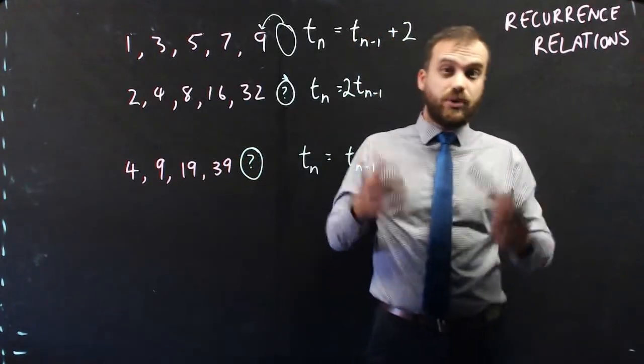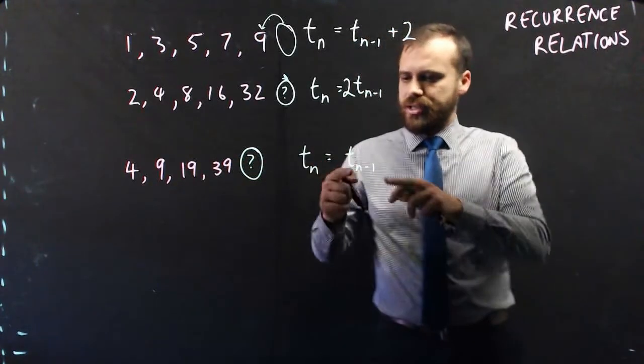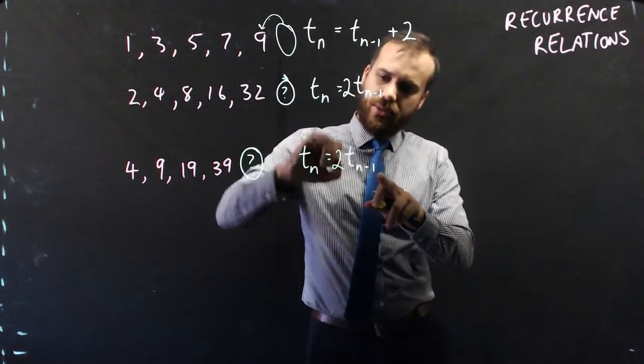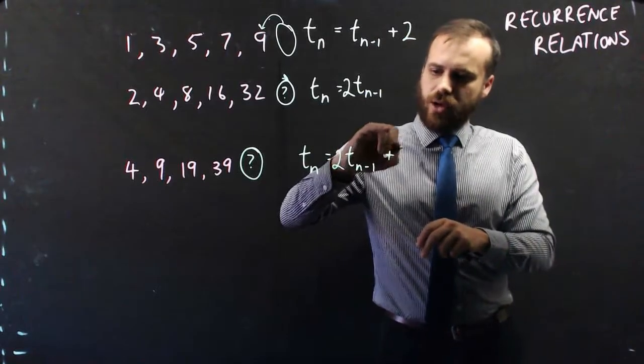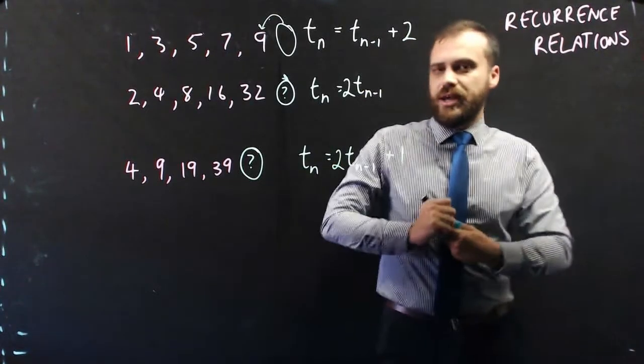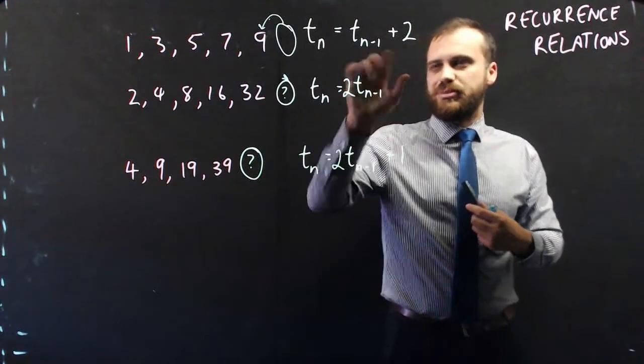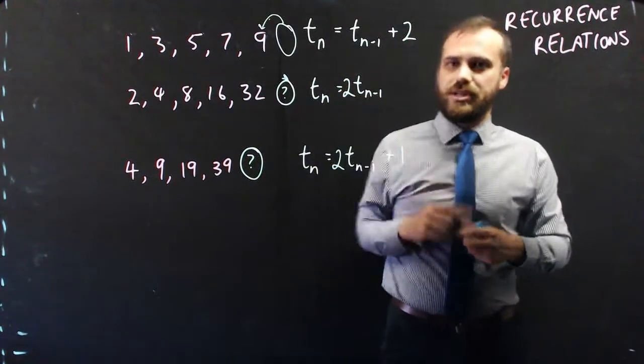Double, add 1. That's what I'm doing. That's what my formula is. So I take the previous term, double it, multiply it by 2, and then add 1 to it. Okay, that's how a recurrence relation works. You take the previous term and do something to it so you'll know the next term.